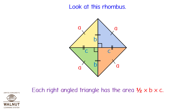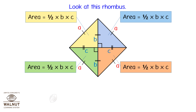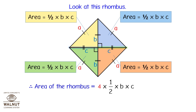Each right-angled triangle has area equal to half into B into C. So the area of the blue triangle equals half BC, the yellow triangle equals half BC, the green triangle equals half BC, and the orange triangle equals half BC. Therefore, area of the rhombus equals 4 into half into B into C, which gives us area of the rhombus equals 2 into B into C.